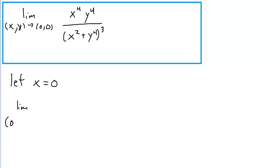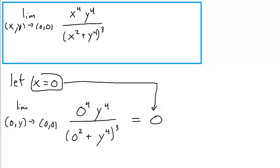We have the limit as y goes to zero of zero to the fourth y to the fourth over zero squared plus y to the fourth, and all that is cubed. We'll note that the denominator is always non-zero as we approach zero, zero, and the numerator is always zero. So basically, we know the limit is zero along this path. That's great.